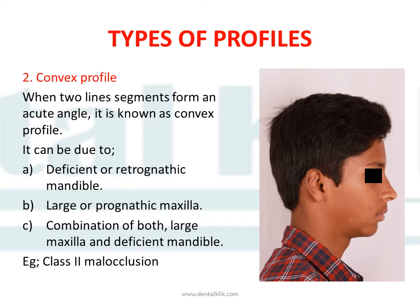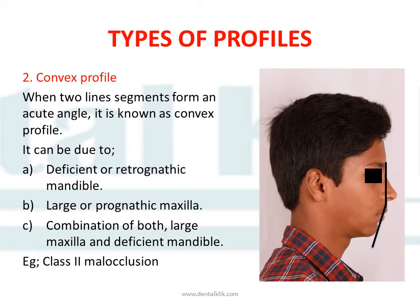A convex profile is when the two line segments form an acute angle. This can be due to various reasons, such as a deficient or retrognathic mandible, as seen in this case, or a large or prognathic maxilla. A convex profile is also seen with a combination of both a large maxilla and a deficient mandible. Convex profiles are seen mainly in Class II malocclusions.